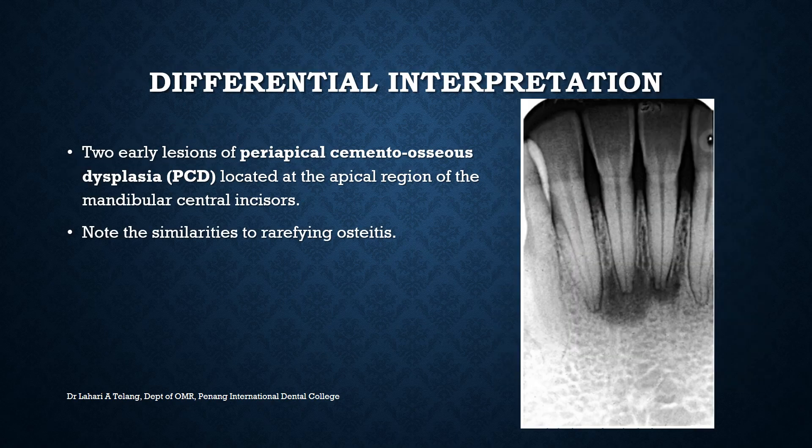When talking about differential interpretation on a radiographic image, a very common differential diagnosis is periapical cemento-osseous dysplasia, also called periapical cemento-dysplasia. In this radiograph you can see both incisors having ill-defined radiolucencies, but the most important difference is that the tooth would be vital. On a radiograph they appear very similar to rarefying ostitis, so they form the best differential diagnosis for rarefying ostitis.